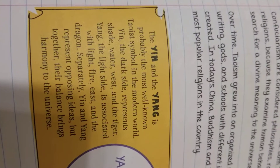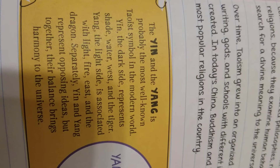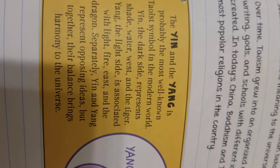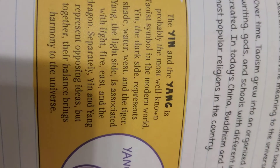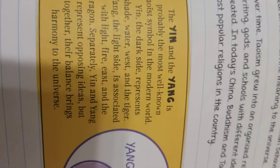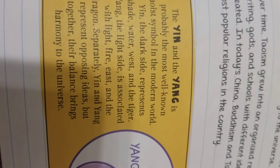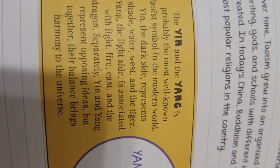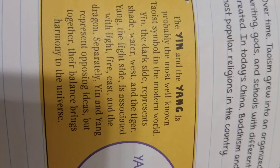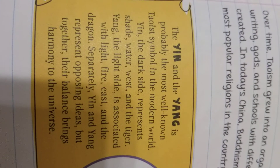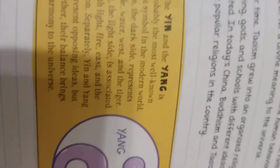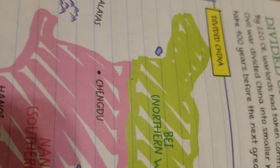The yin and yang is probably the most well-known Taoist symbol in the modern world. Yin is the dark side, representing shade, water, and the west. Yang is the light side, associated with light, fire, and the east. Together, their balance brings harmony to the universe.